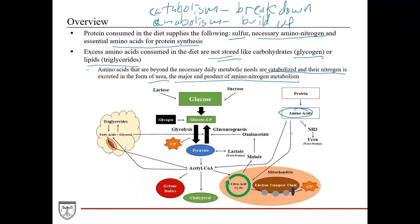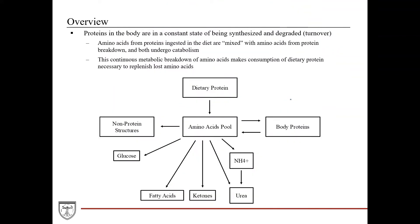Amino acids are broken down and used for metabolic processes, and whatever's left over is broken down into ammonia and then urea, which is the final waste product. Amino acids can be used in the citric acid cycle, and they can also be broken down into acetyl-CoA, which can be used for fatty acid synthesis or to synthesize ketone bodies. However, they're typically only used during prolonged periods of fasting. Proteins in the body are in a constant state of being synthesized and degraded, also known as turnover, mainly because excess amino acids are not stored.